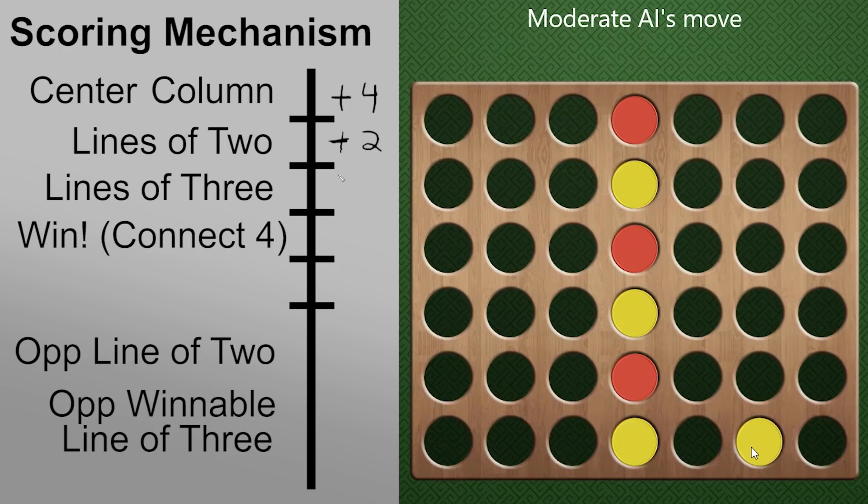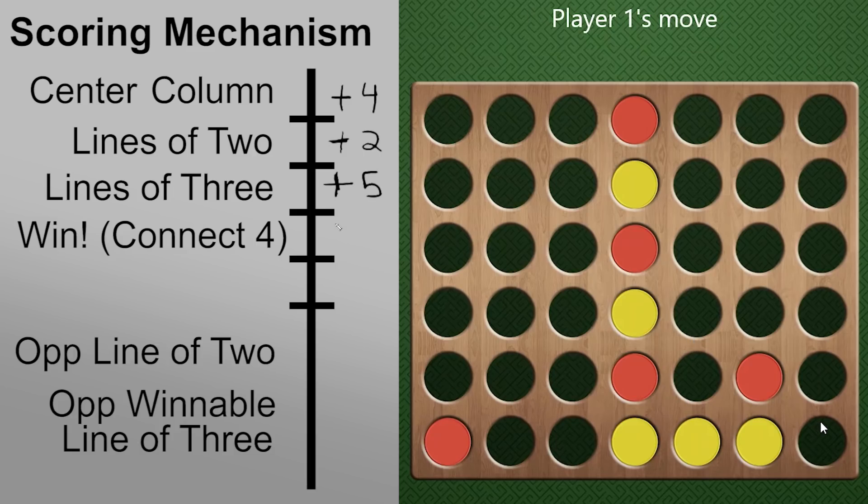Next, we have the lines of three. This definitely should be weighted more than center column and line of two. So we'll give this a plus five. And again, both directions, left and right. And finally, the winning, that's the best thing that can happen in the game. So we're going to give this a very big score, as you can see. And basically, you just need this to always select it. So it should be a high enough score that it will always be picked if it is an option.